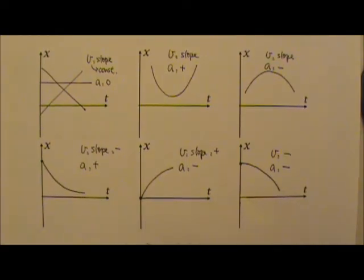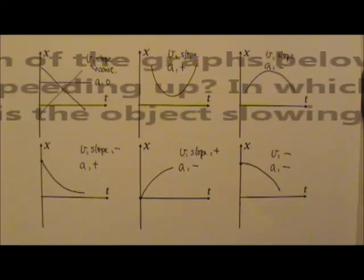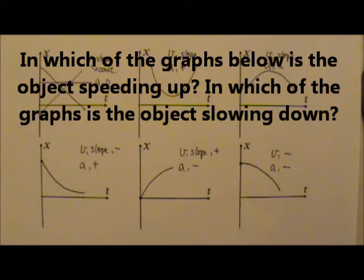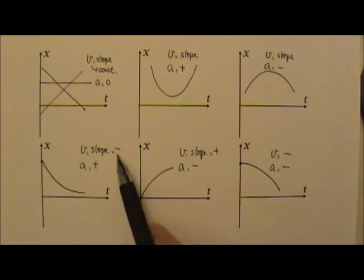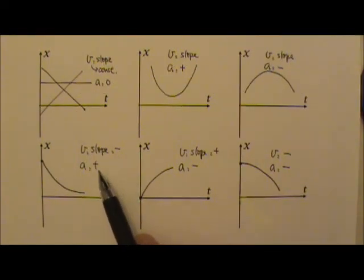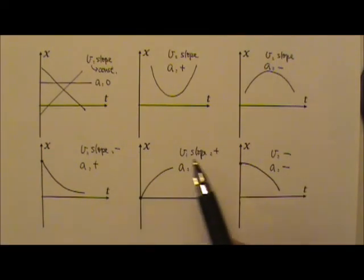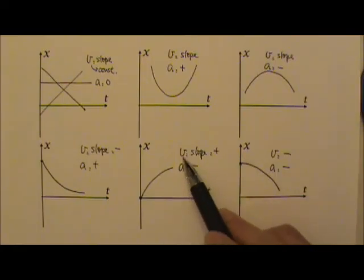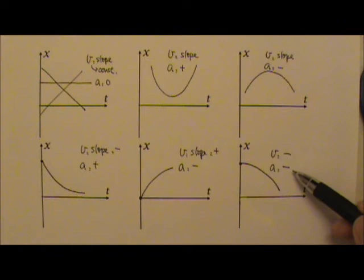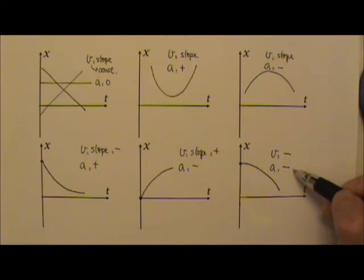Now let's look at these three graphs again. In which of these is the object speeding up, and in which is the object slowing down? In the first one, the velocity is in the negative x direction and the acceleration is in the positive x direction — opposite directions — so the object is slowing down. These two are also opposite directions, so the object is slowing down. In the last one, both velocity and acceleration are in the negative x direction, so this object is speeding up.